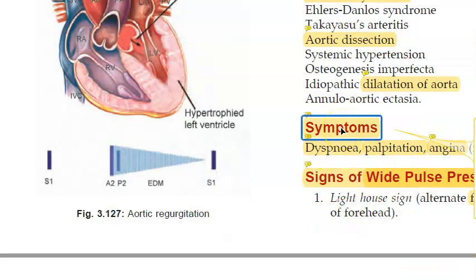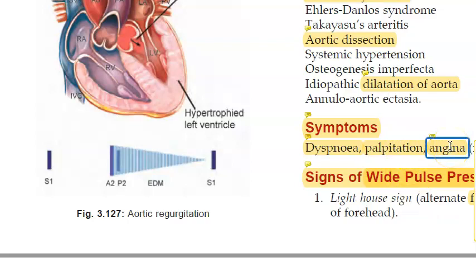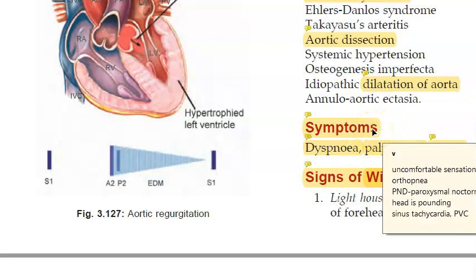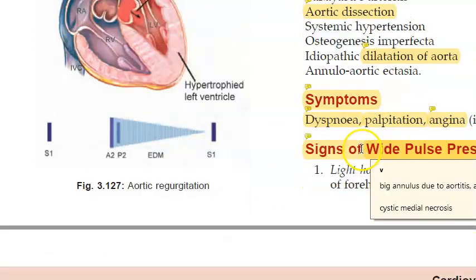Symptoms of aortic regurgitation include palpitations, and pulsations everywhere in the body — from the uvula to the spleen, liver, and pupil. Angina can occur and can even be at rest in severe cases. Dyspnea occurs when the atria are involved and there is pulmonary edema. These people will also notice a pounding feeling in the head, as blood is going to the systemic circulation and then going back repeatedly.